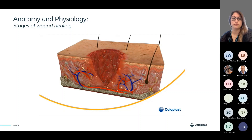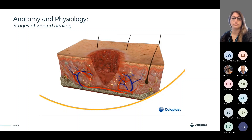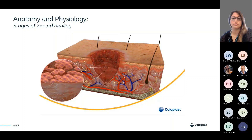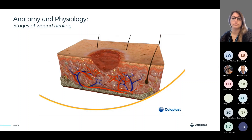During the proliferation phase, the wound is filled with granulation tissue, which consists of newly formed capillaries and connective tissue. The formation of new capillaries — angiogenesis — ensures nutrients are supplied for granulation tissue formation and is essential for wound healing. Fibroblasts are the predominant cells in the proliferation phase; they migrate into the wound site from surrounding tissue and multiply. In the last part of the proliferation phase, the wound is made smaller by wound contraction, brought about by specialized fibroblasts called myofibroblasts.